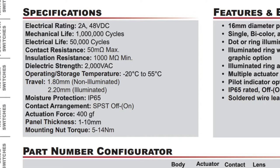The specifications consist of numbers showing various aspects of how the switch works. For example, if you want to know how long the switch will last, you can look at its electrical life cycle. If your switch will be operating in very high or low temperatures, you can look at its operating temperature range.